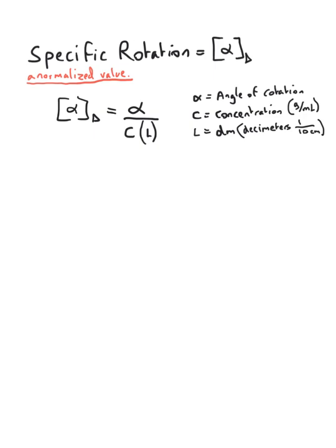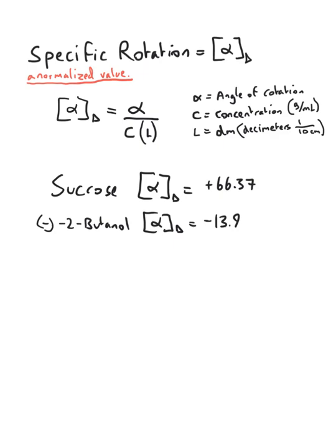For example, what do the values look like? Well, sucrose, your sugar, has a specific rotation of positive 66.37. Whilst, say, 2-butanol, negative 2-butanol has a specific rotation of negative 13.9. So we could also call this L-2-butanol.